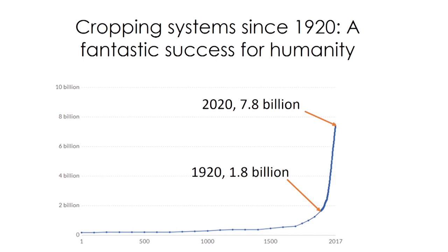This is some context. This is the human population from 0 BC all the way to 2020. You can see up until 1920 — maybe 1820 if you want to be more specific — but for most of human history, human population has been growing pretty slowly over time, and this was entirely due to the fact that there was not enough food. People were just always hungry.